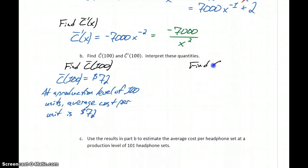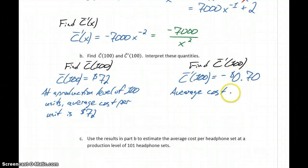If we find the marginal average cost at a production level of 100 units, we can calculate the marginal average cost by plugging 100 into our marginal average cost function which is going to give us negative 70 cents.